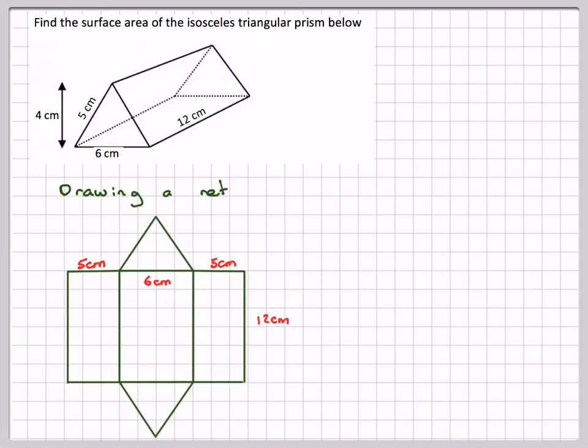This length here is 6 which corresponds to this one, and here we have the perpendicular height of the triangle which is 4.